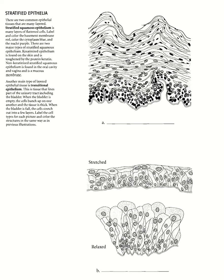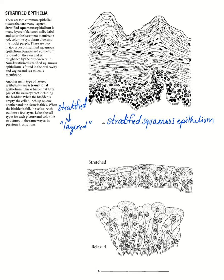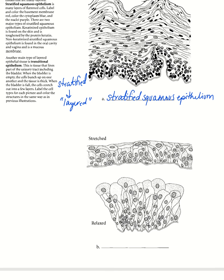Let's move on to our truly stratified epithelia. We have our stratified squamous — our layered squished cells. Just a reminder: stratified equals layered. And then we also have what's called transitional epithelium.